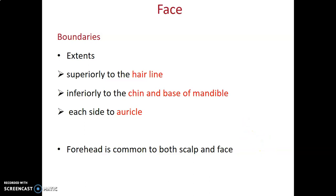The face extends superiorly from the hairline and inferiorly to the chin and the base of the mandible. On each side, the face extends to the auricle — hairline to the chin and base of the mandible and sideways to the auricles. The forehead is therefore common for both the scalp and face; part of the forehead is part of the scalp, and the forehead is also part of the face.